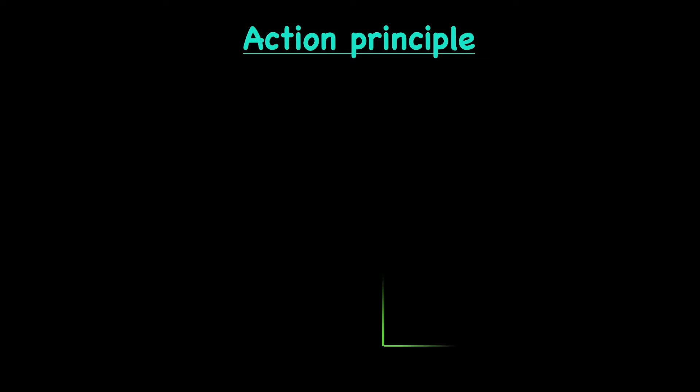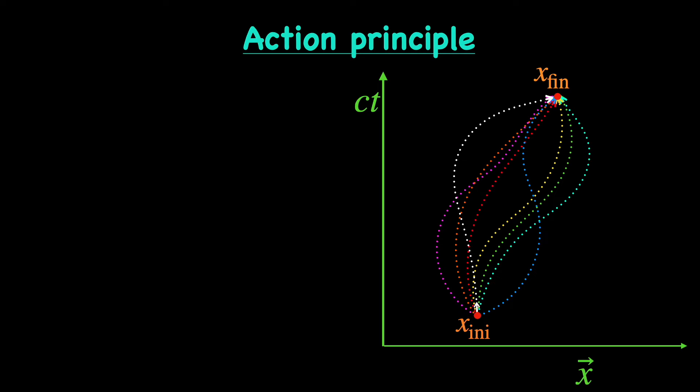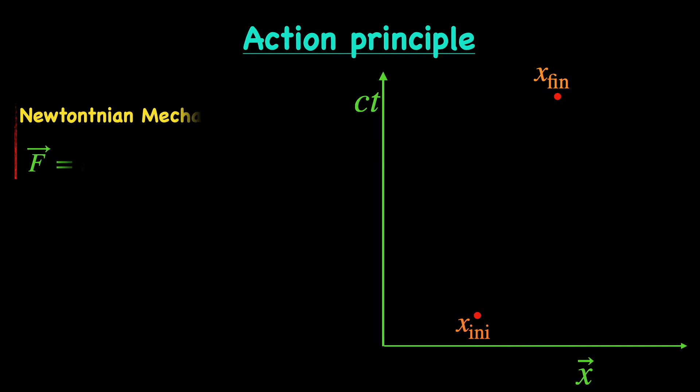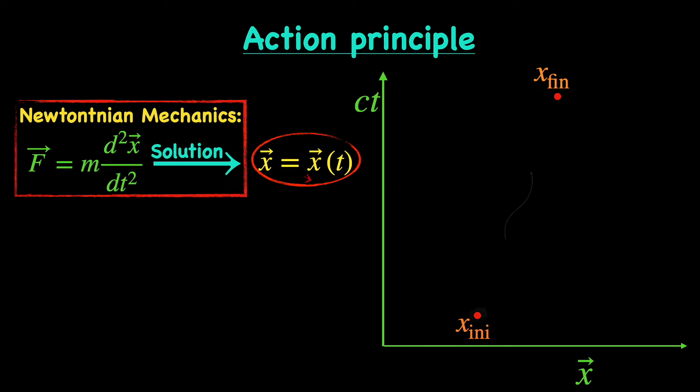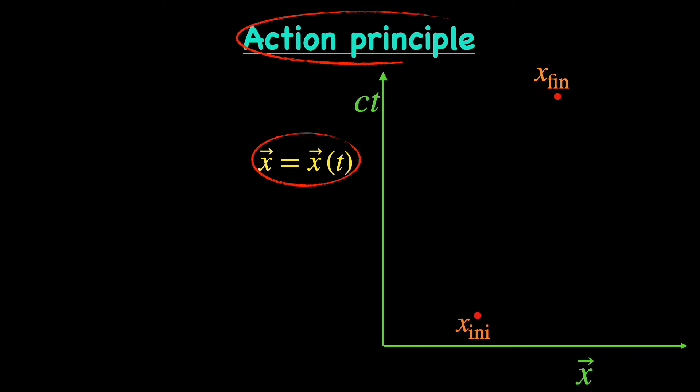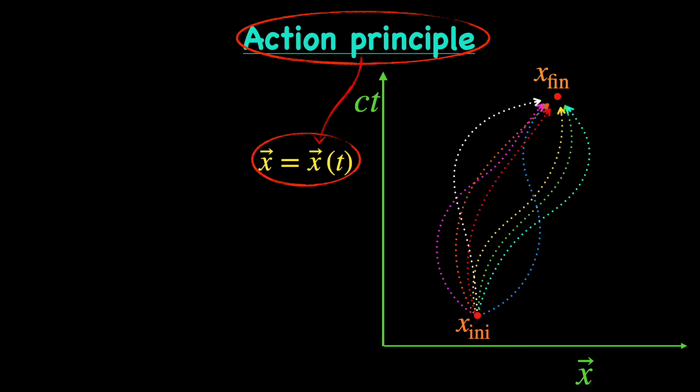First thing to note is we start with the initial and final locations as a given, but we do not know which particular trajectory among the numerous possible ones the particle is actually going to travel through. In Newtonian mechanics we find that out by solving Newton's force equations, otherwise known as the equations of motion. Turns out the action principle can also single out the correct trajectory from the various possible ones by demanding it is the path for which the action remains stationary.